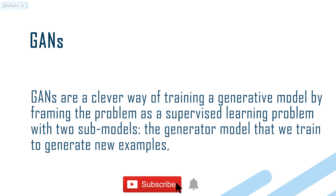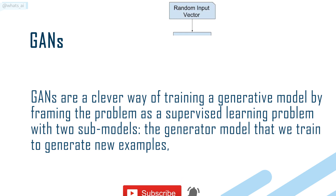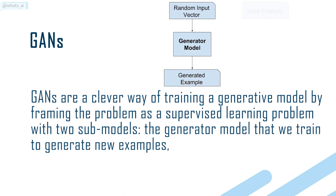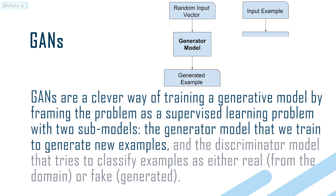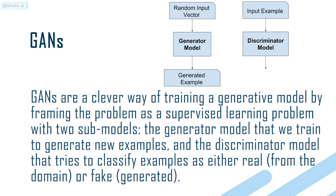GANs are a clever way of training a generative model by framing the problem as a supervised learning problem with two sub-models: the generator model that we train to generate new examples, and the discriminator model that tries to classify examples as either real, from the domain, or fake, generated.